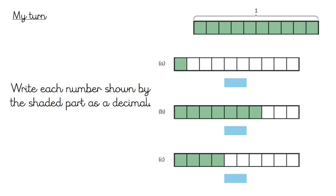Now let's look at decimals displayed as bar models. This bar model displays a whole — these are ten tenths, and ten tenths is the same as one whole. One tenth shaded is 0.1. Part b has seven tenths shaded, represented as 0.7. Part c has four tenths shaded, which as a decimal is 0.4.